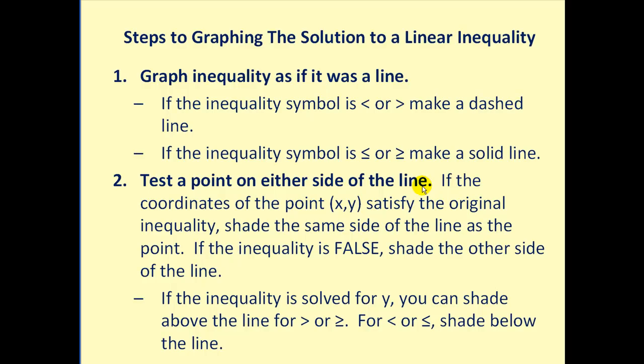Next, we will test a point on either side of the line. If the coordinates of the point satisfy the original inequality, we will shade the same side of the line as the point. If the inequality is false, we will shade the other side of the line. There is a shortcut if the inequality is solved for y. You can shade above the line for greater than or greater than or equal to. For less than or less than or equal to, you would shade below the line.